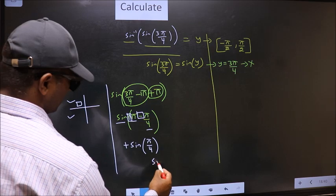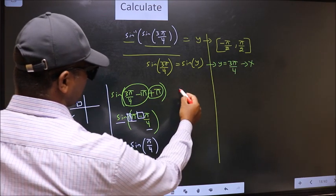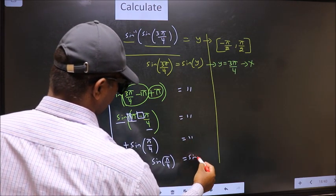Plus sin π by 4 is nothing but sin π by 4. On the other side no change. Equal to sin y.